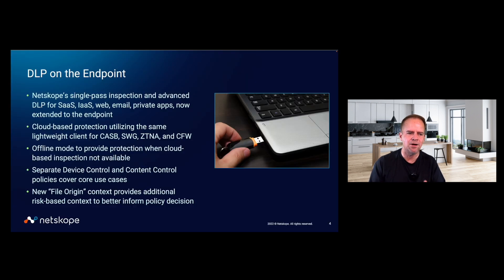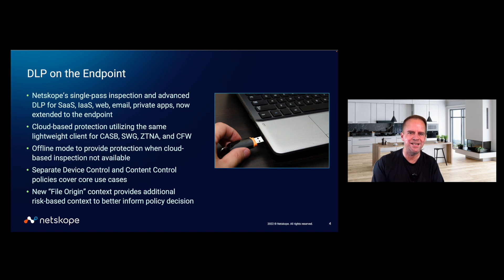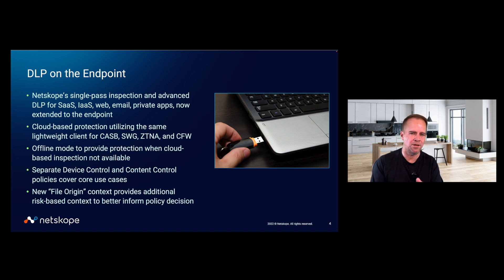When it comes to DLP on the endpoint, we're leveraging the same cloud inspection point that you get with the Netscope SASE platform. Unlike traditional Endpoint DLP systems that rely on a bloated agent that uses all the CPU and memory footprint, this is much more elegant. Most of the processing takes place in the cloud. That lightweight Netscope client you use for secure web gateway, cloud access security broker, zero trust network access, and cloud firewall — you can now extend it all the way to Endpoint DLP with the same unified client.